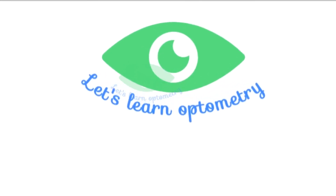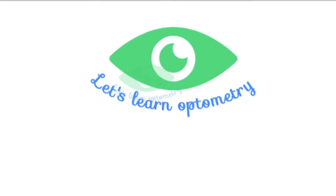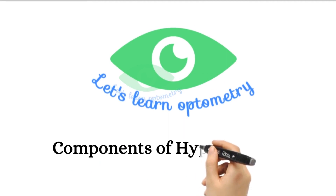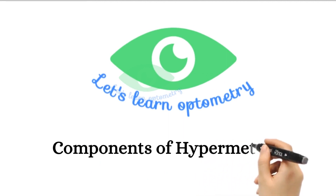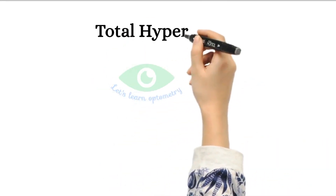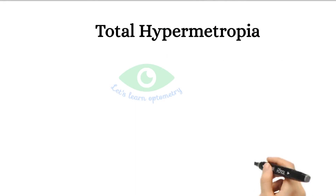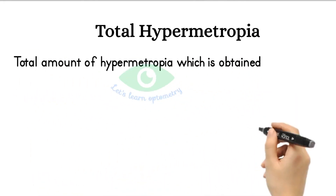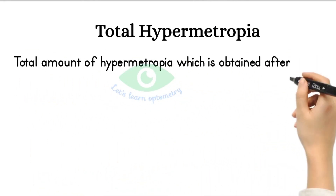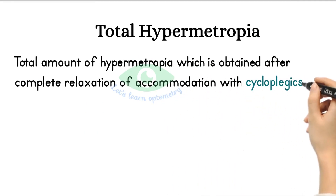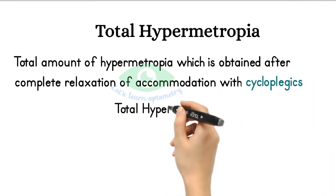Welcome to Let's Learn Optometry. In this video we will see about the components of hypermetropia. Total hypermetropia is the total amount of hypermetropia which is obtained after complete relaxation of accommodation with a cycloplegic like atropine.